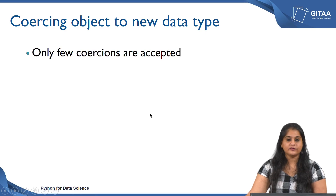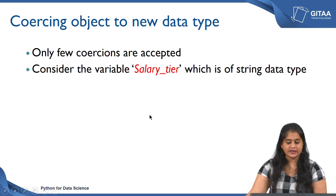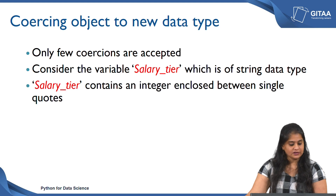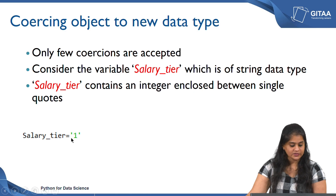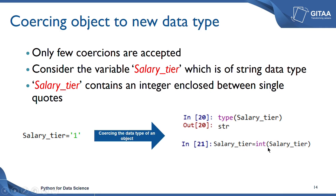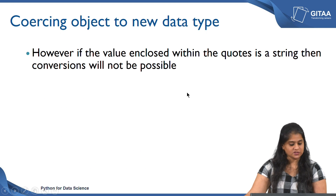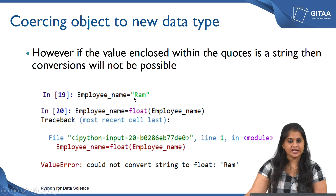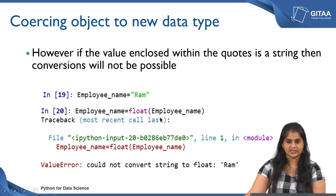One important point is that only certain types of coercion are accepted. For example, if I have a variable called salary_tier which is a string containing the number 1 enclosed in single quotes, it is still treated as a string. I can convert it to an integer by writing salary_tier = int(salary_tier). However, not all coercion is possible — for instance, if I try to convert the employee name 'ram' to an integer or float, I will get an error. If the value within quotes is a numeric type, coercion will be possible; if it is a set of characters or letters, those types of coercion will not be possible.